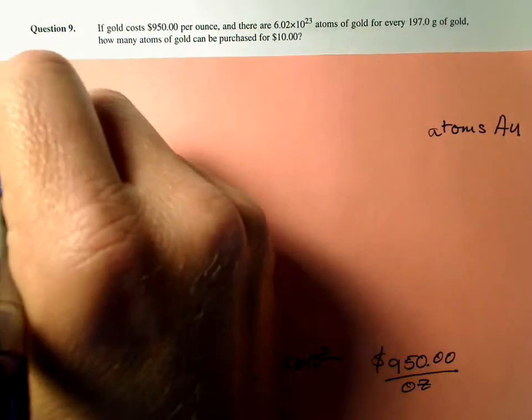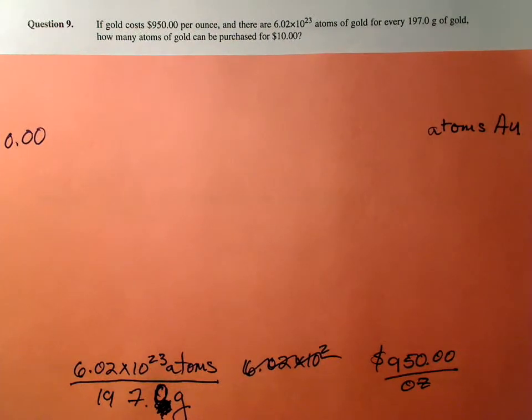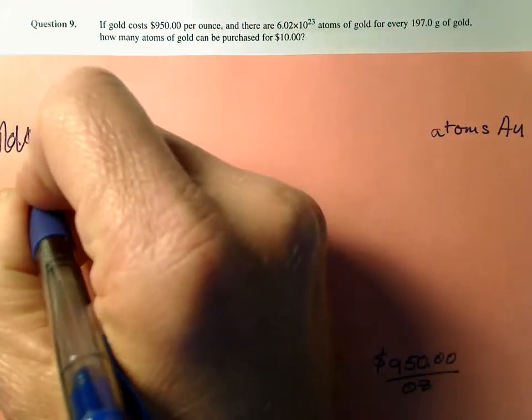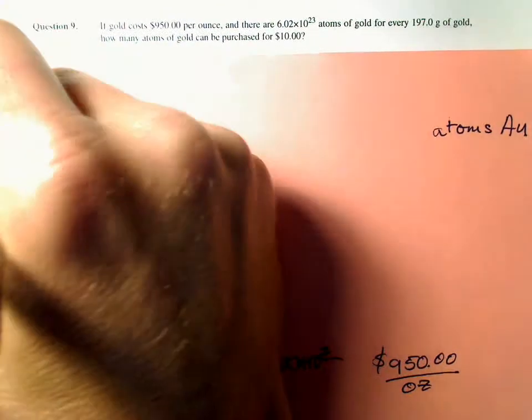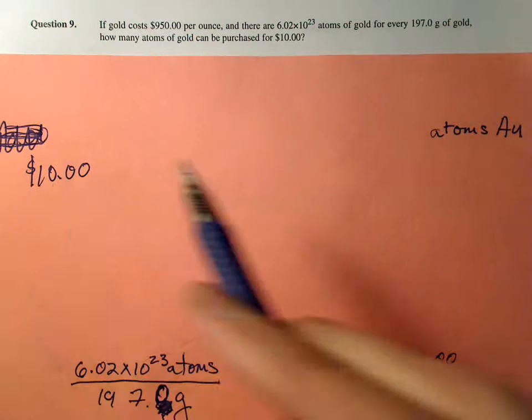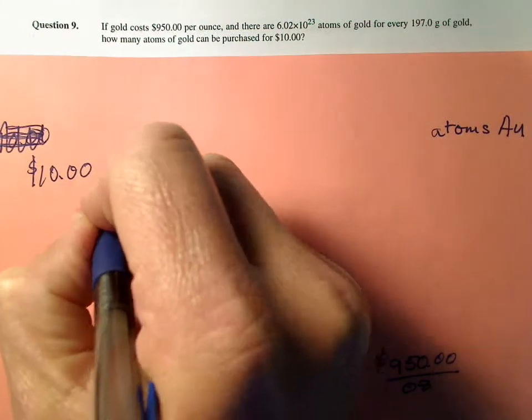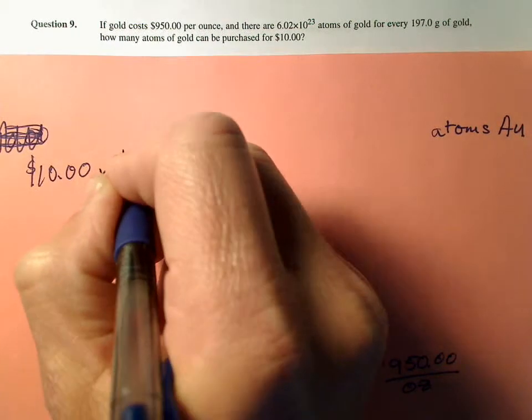So let's go ahead and start with $10, units of money. I'm having trouble staying in the lines here, so I'm going to go ahead and rewrite this. $10. So now I have to get from dollars to atoms. Do I have any conversion factor with dollars in it? Oh look at that, I got this one here - $950 per ounce. So I'm going to use that one. $950 on the bottom per one ounce.